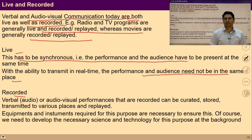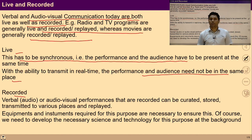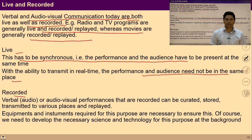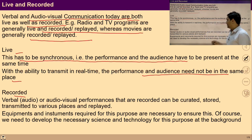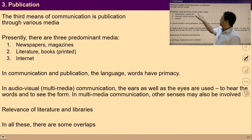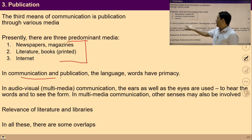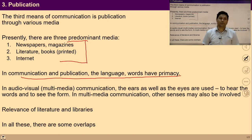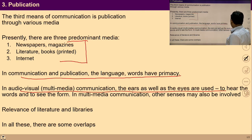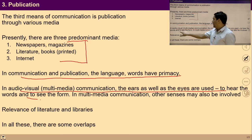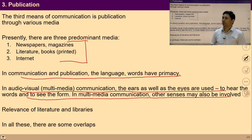Equipment and instruments are required for this purpose. Various forms of audio-visual communication have a whole range of possibilities like drama, plays, etc. Presently, there are three prominent media: newspaper, magazine, literature, books, and internet. In communication and publication, language and words have played a very important role. In audio-visual communication, the ears as well as the eyes are used — words and seeing the form. In multimedia communication, other senses may also be involved.